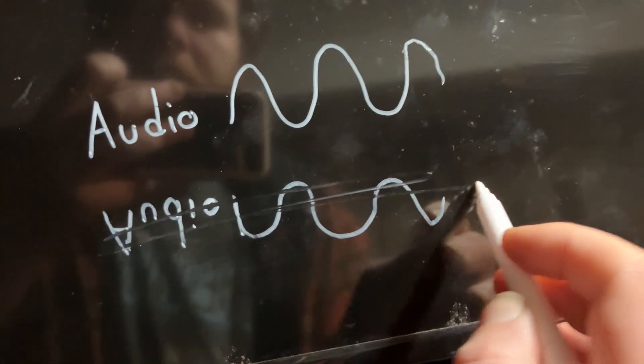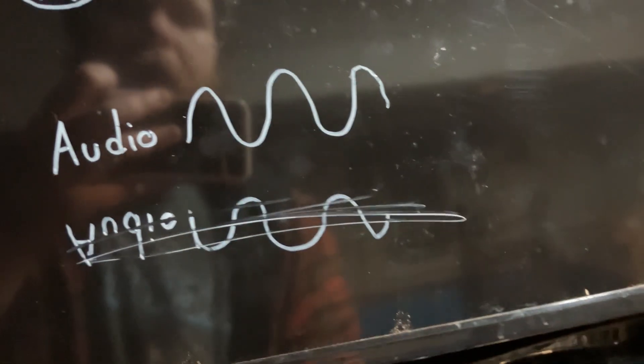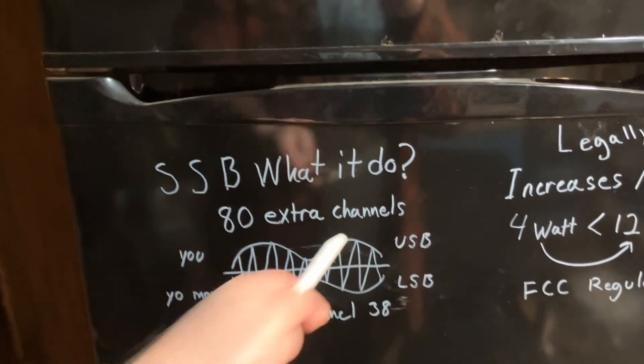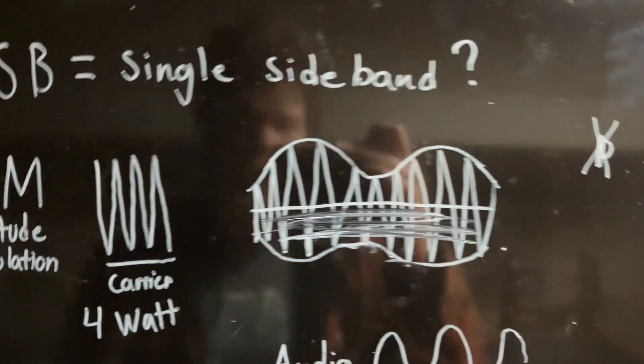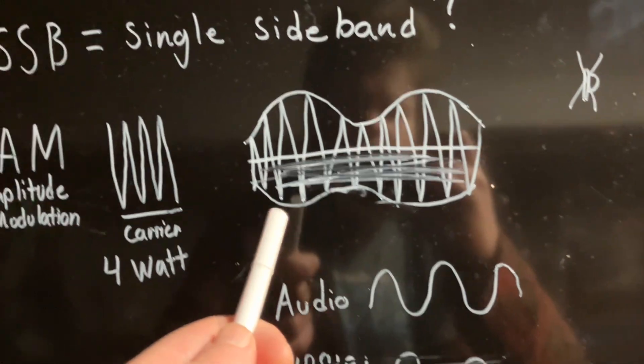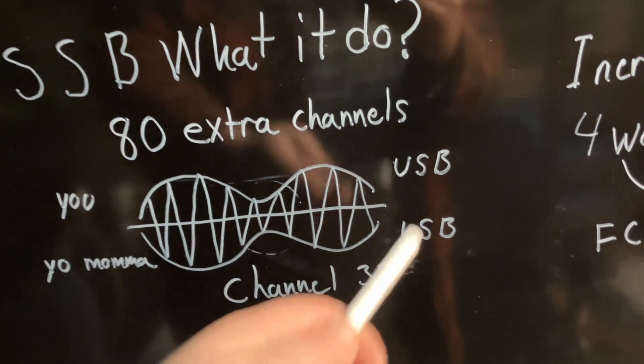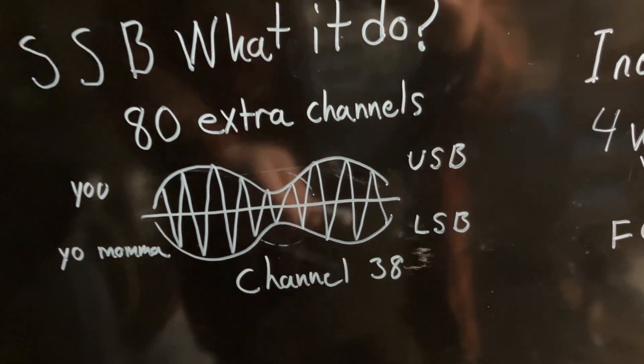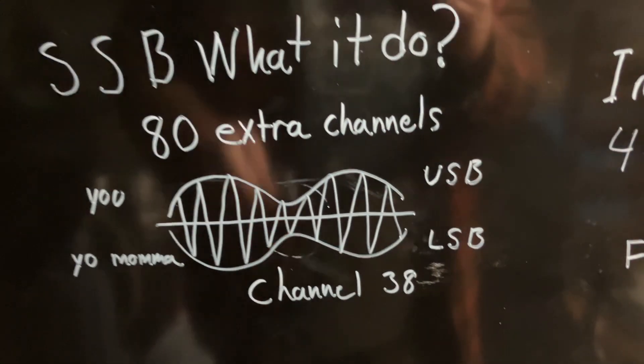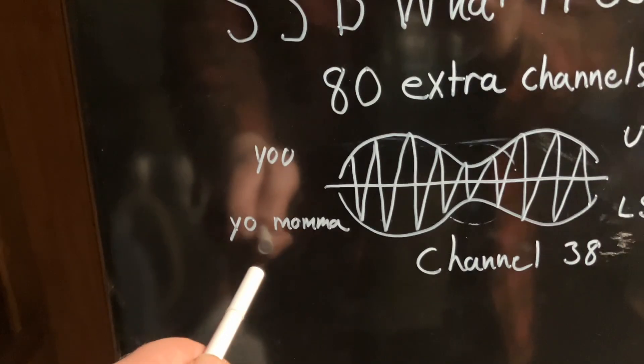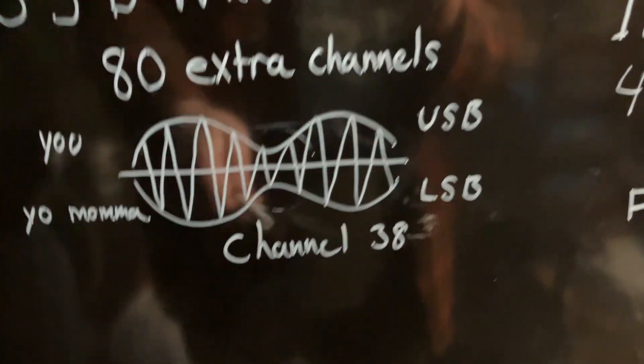So what can sideband do for you? Well, it can give you 80 extra channels. This is just a visual representation of sidebands. If you have an SSB radio, you've probably seen USB and LSB on that radio—that stands for upper sideband and lower sideband. That means on channel 38, both you and your mama can be talking to different people on the same channel.